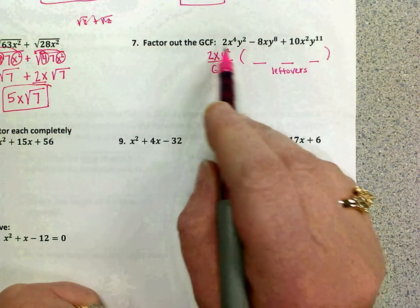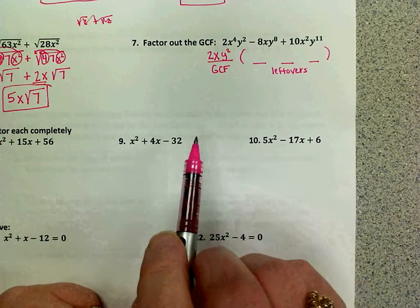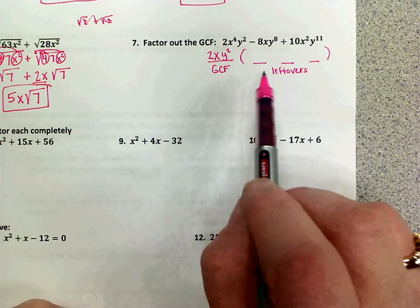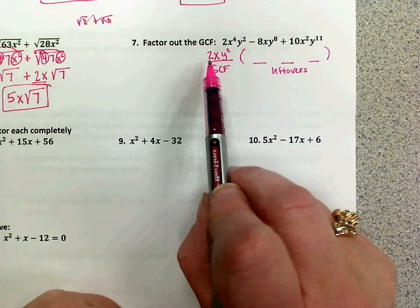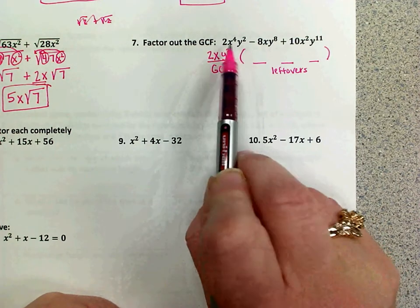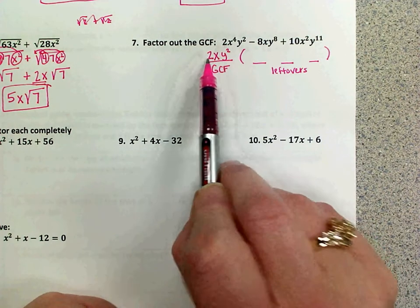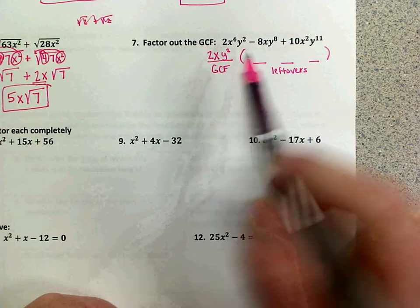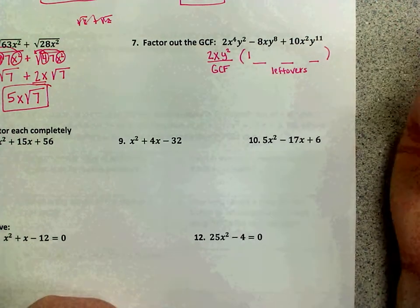So this is what I'm taking out of each one of my terms. You can think of it as distributing backwards. So you can think to yourself, two times what would give me that two? Well, two times one is two. So I really can write that one or not write that one. It really doesn't matter.